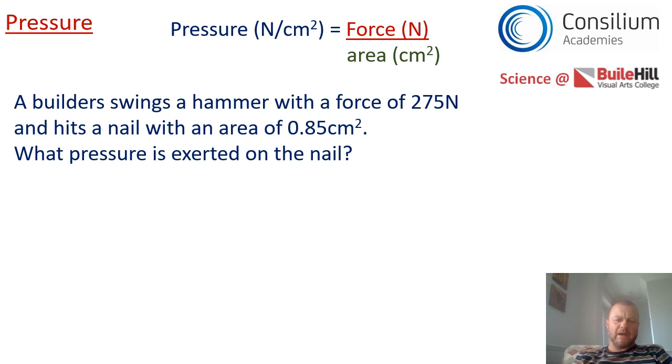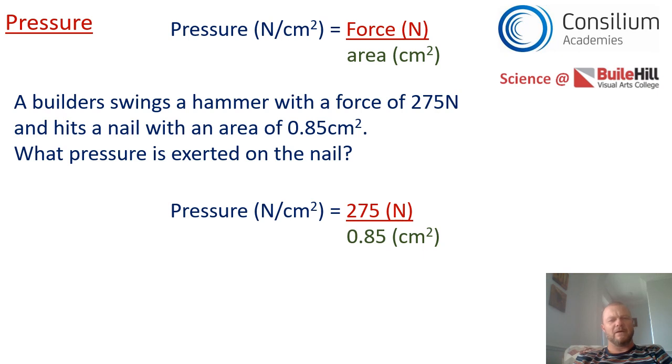The working out would look like this. Pressure equals force 275 divided by our area of 0.85, and if we put that into a calculator the pressure on the nail would be 323.53 newton centimetres squared. Well done if you got that right. Check your working if you didn't.